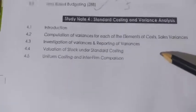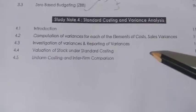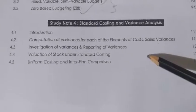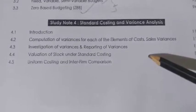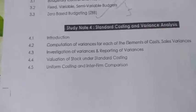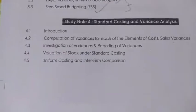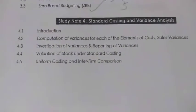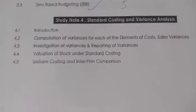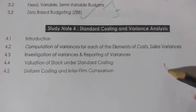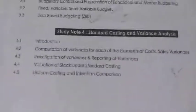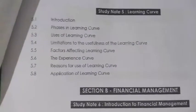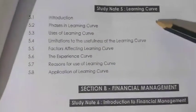The fourth chapter is Standard Costing and Variance Analysis. This covers the important variances — we study four types of variance in this chapter. We will complete the required questions from this topic.